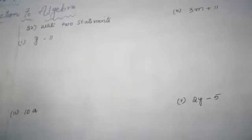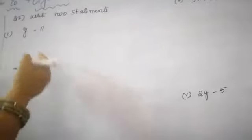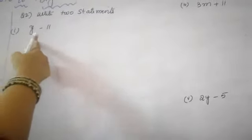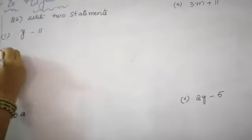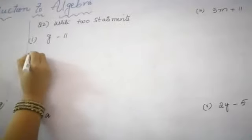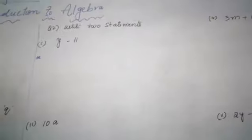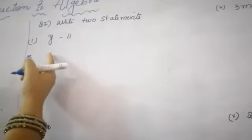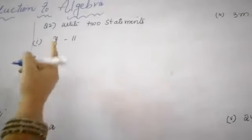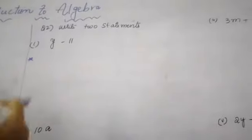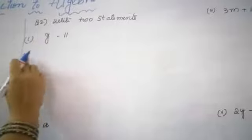Now question number 2, children: write 2 statements for each expression. He has given the expressions, and now you are going to write statements for them. I will give you a start — for the first expression, I am writing because he is asking you 2 statements.